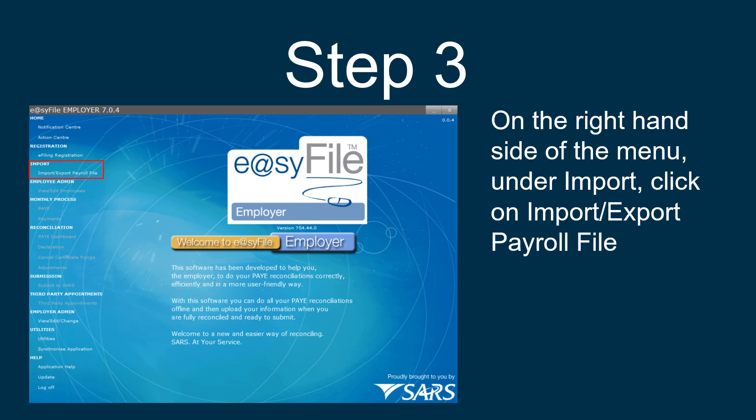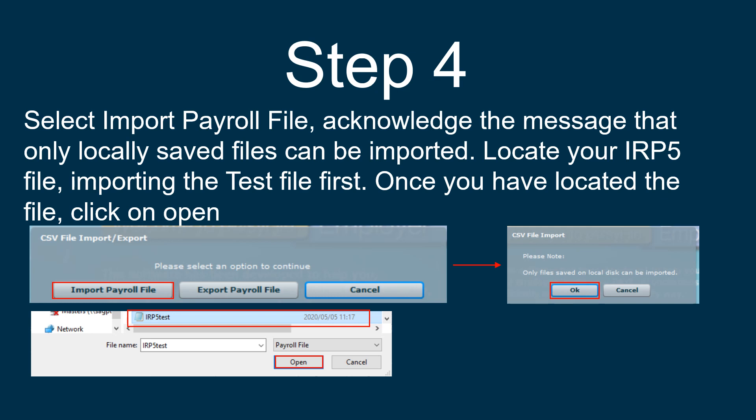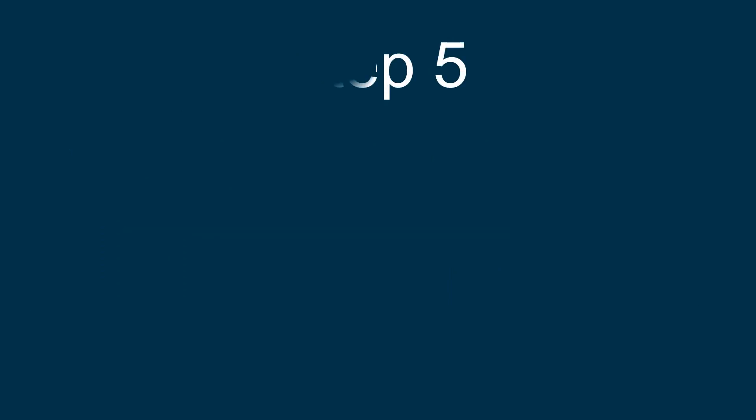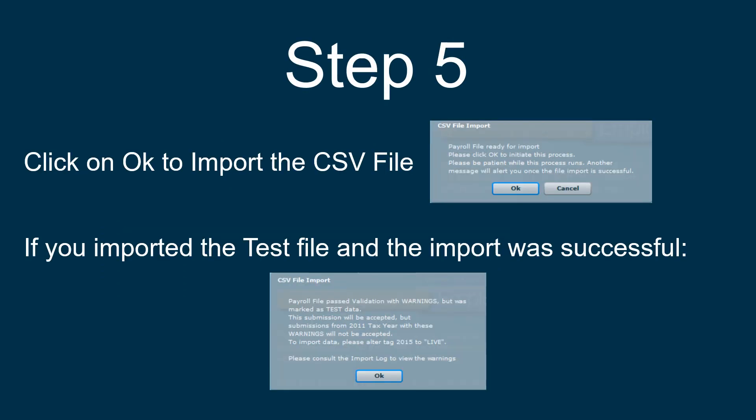On the right-hand side of the menu under Import, click on Import/Export Payroll File. Select Import Payroll File, acknowledge the message that only locally saved files can be imported, then browse and locate your IRP5 file, importing the test file first. Once you have located the file, click on Open. Click on OK to import the CSV file.